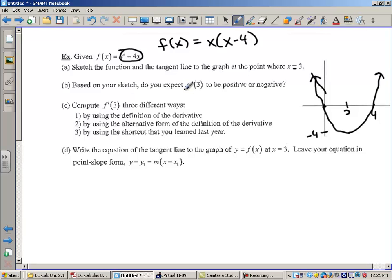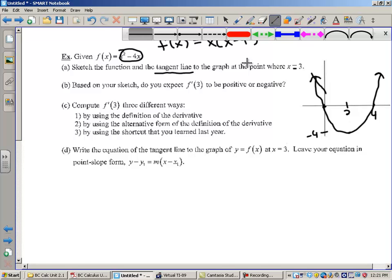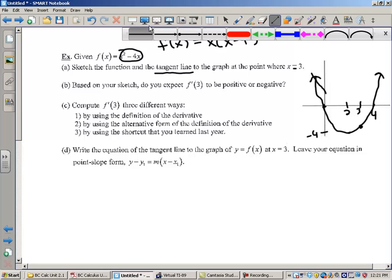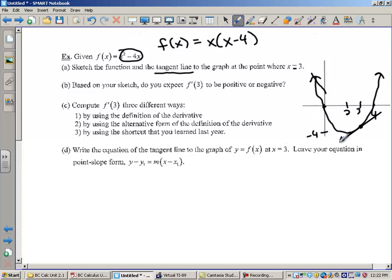Based on your sketch, do you expect... Oh, I'm also supposed to draw the tangent line to the graph at the point where x equals 3. So let me come back here to my marker. x equals 3 is out here. Here is a dot for the function f of 3. And I'm going to go grab a line and draw a tangent line. See if I can do that a little bit better. All right. So there is the tangent line at x equals 3. All right. Based on your sketch, do you expect f prime of 3 to be positive or negative? Well, this tangent line right here, this slope is positive. It's going up. Therefore, I expect f prime of 3 to be positive. So I think it's going to be greater than 0.